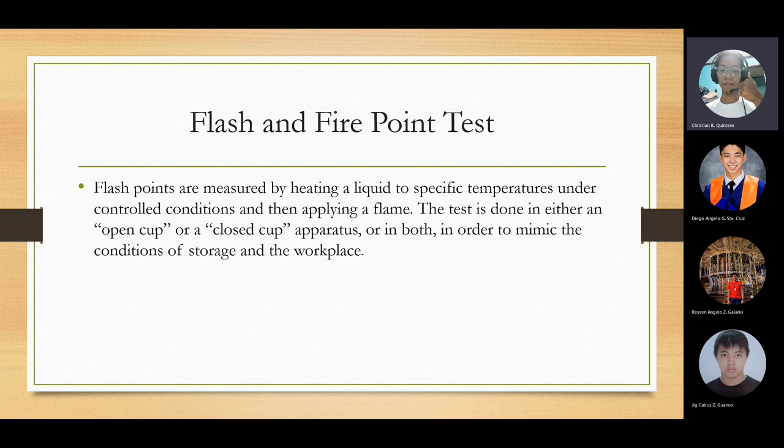Flash and fire point tests: flashpoints are measured by heating a liquid to specific temperatures under controlled conditions and then applying a flame. A test is done in either an open cup or closed cup apparatus, or both, in order to mimic the conditions of storage and the workplace. There are two types: open cup and closed cup. In open cup, the vessel containing the fuel is open to air. In closed cup, it's sealed. These two scenarios mimic different conditions, like when oil is inside an engine.